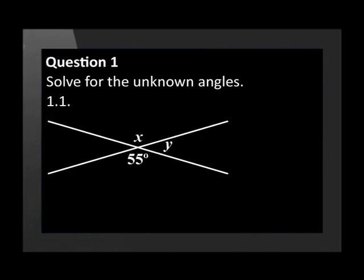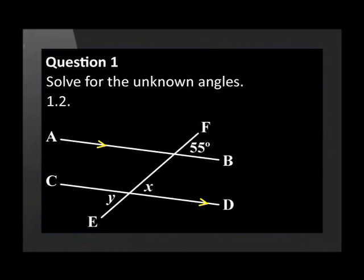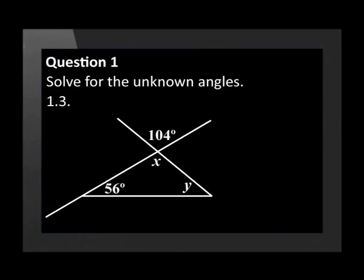Let's get started. Solve for the unknown angles. In the first diagram, there are two straight lines that intersect. The second diagram shows two parallel lines crossed by a transversal. The third diagram shows a triangle. Remember that diagrams are often drawn to be misleading, so that we can test your knowledge on the rules and not your interpretation of the diagram.